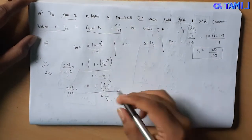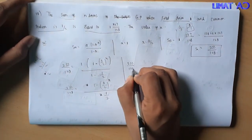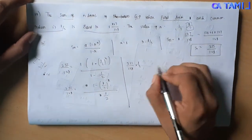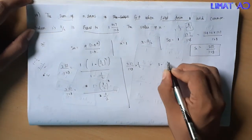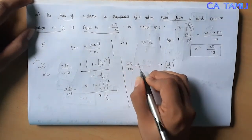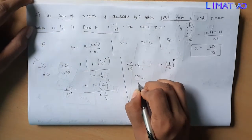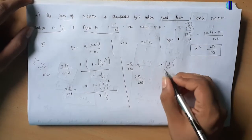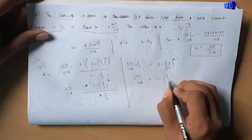Next step: 255 divided by 128 equals 1 minus 1/2 to the power n, divided by 1/2. Dividing by 1/2 is the same as multiplying by 2, so 255 divided by 128 into 2 gives us 255 divided by 64 on the left side, equal to 1 minus 1/2 to the power n.